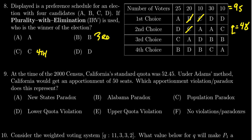D still has 40 votes total. A, on the other hand, gets 25 plus 20 plus 10, which is 55 — larger than the quota of 48. A is the winner. Second place goes to D, but first place is A. Candidate A is the winner of the election.